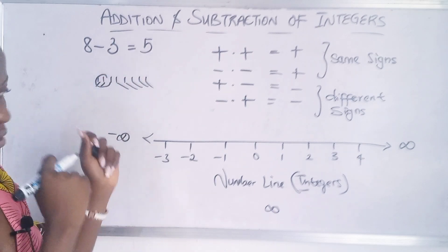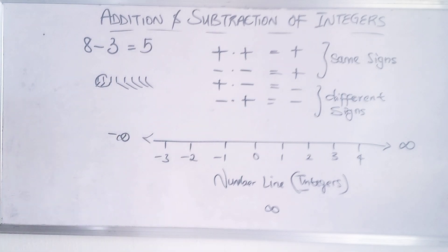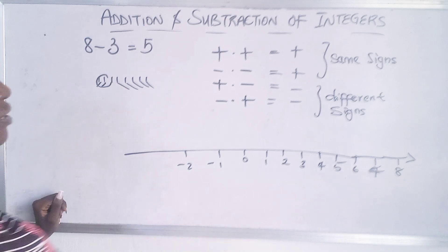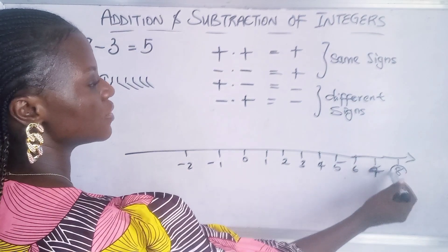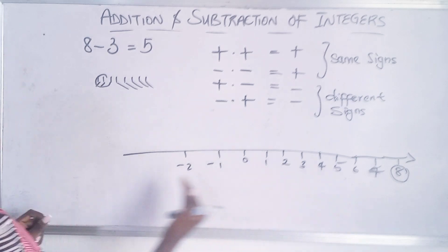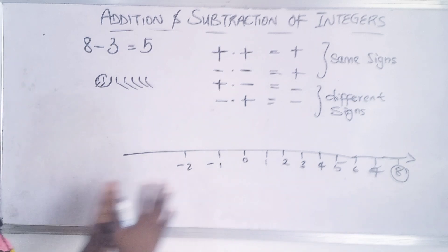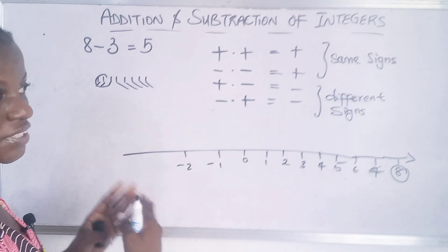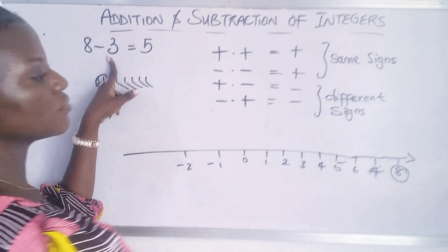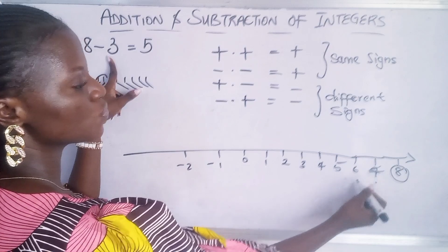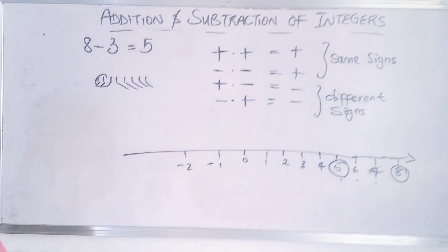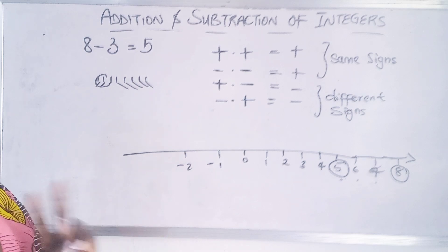Using the number line: if you want to add or subtract integers, start at eight. Because there's a negative, you move to the left-hand side. If it's positive or addition, you move to the right-hand side. So negative three means you count one, two, three to the left — and you stop at five. So eight minus three is five.